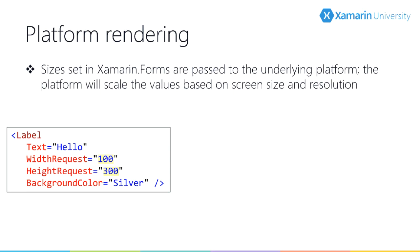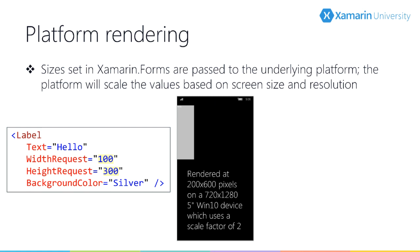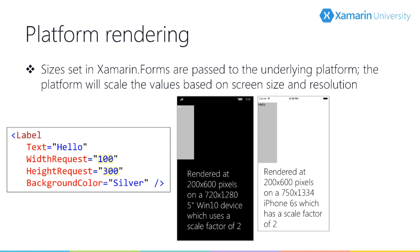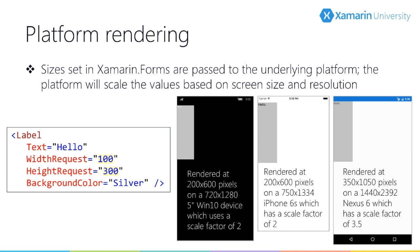Suppose we have a view sized 100 by 300, and the panel respects those values. If we run this on a 5-inch Windows 10 device, the OS calculates a scale factor and applies it — in this case rendering at 200 by 600 physical pixels because the device uses a scale factor of 2. We'd get the same result on an iPhone 6s. On a Nexus 6 with a scale factor of 3.5, it would render at 350 by 1050 physical pixels.